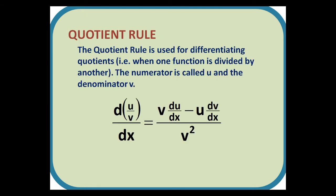Quotient rule. The quotient rule is used for differentiating quotients, i.e. when one function is divided by another. The numerator is called u and the denominator v. The formula is as shown: v du by dx minus u dv by dx divided by v squared.